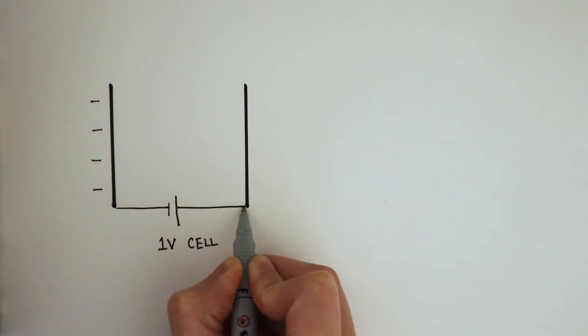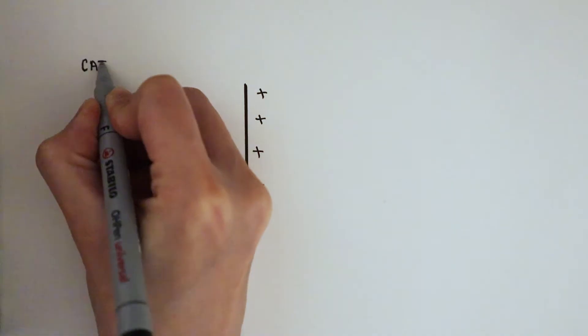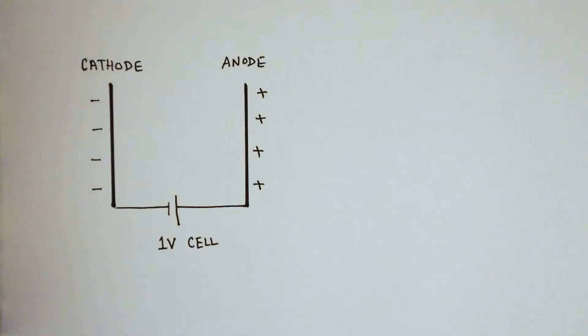This plate is connected to the positive terminal, making it positive. That's the cathode, and this is the anode.